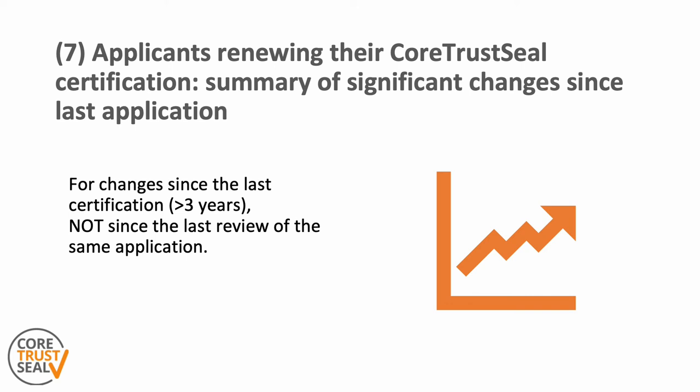The seventh part of requirement zero is only for existing applicants — those that are renewing their Core Trust Seal certification. This is a summary of significant changes since the last application, because there is an expectation of continuous improvement over time. A repository should highlight any significant changes, including to technical systems, designated community or funding during the three previous years. This can also include any steps taken to move from 'in progress' to 'implemented'. It's important to realize that this is not meant for changes since the last review, but only for changes since the last certification.